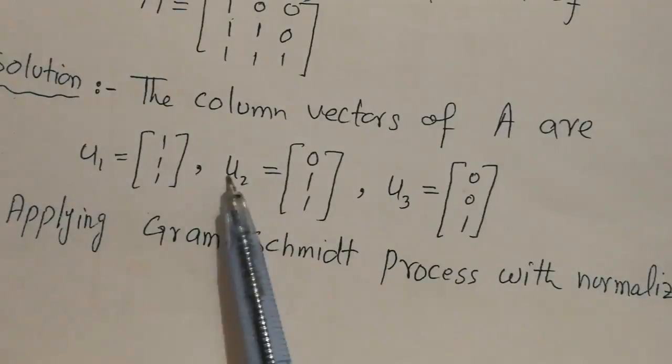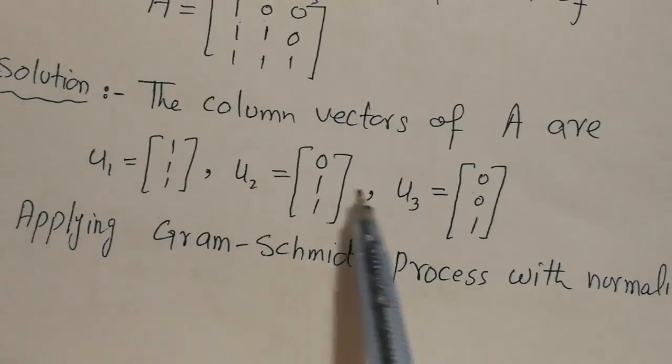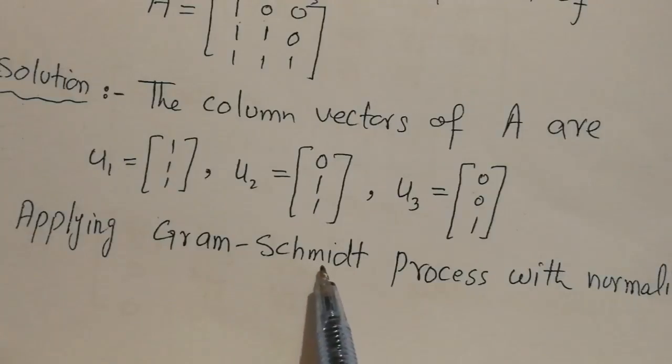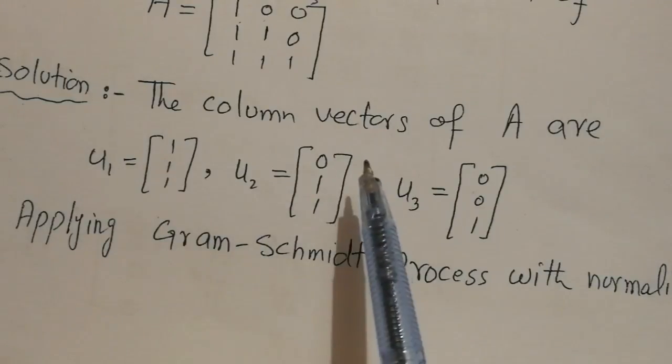Let's take U1, U2, and U3, then apply the Gram-Schmidt process to get Q1, Q2, and Q3. I will skip the calculations and just write down the answers.